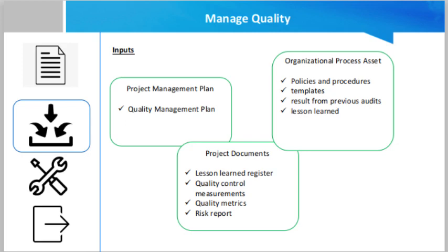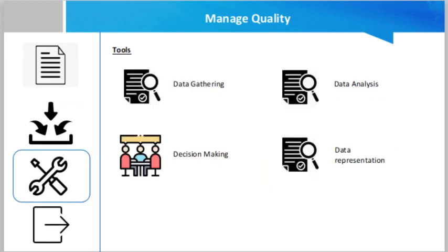Other inputs are project documents like the lessons learned register, quality control measurements, quality metrics, and risk report. Organizational process assets include policies, procedures, templates, lessons learned, and results from previous audits.